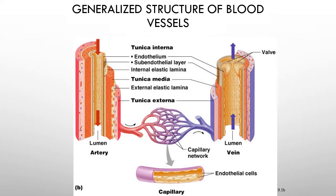Arteries tend to have a relatively small lumen whereas veins have a large lumen, due mostly to the tunica media. The tunica media in arteries is mostly smooth muscle - a large layer of smooth muscle - whereas in veins it is relatively thin. The tunica externa and tunica interna are roughly the same thickness in both. A key difference is that veins have one-way valves to control blood flow and maintain it in a singular direction.